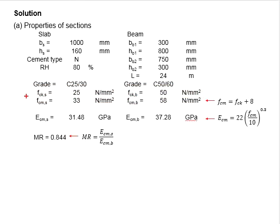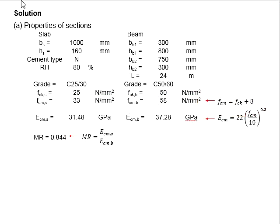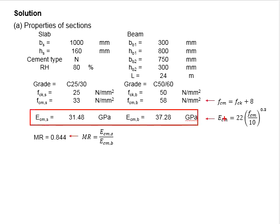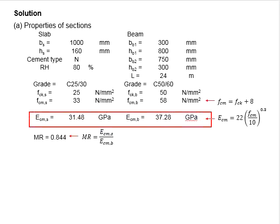To determine the fcm you use this equation, which is fck plus 8 MPa. That will give you 33 and 58 N/mm² fcm for the slab and beam respectively. Their modulus of elasticity is calculated from the equation here. Substitute the fcm into the equation - you get the modulus of elasticity for the slab and beam.